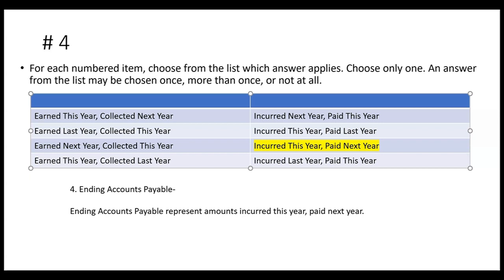Ending payables represent this year's expense — incurred this year, paid next year. That's what we call an accrued expense at year end, and the adjusting entry required is to debit an expense and credit a current liability. If you don't make that entry at year end, income would be overstated because you're leaving out an expense. Also, current liabilities would be too low, leaving out a payable, which means working capital would be too high — current liabilities and working capital have an inverse relationship. We always want to anticipate the next question; that's the I-75 difference.